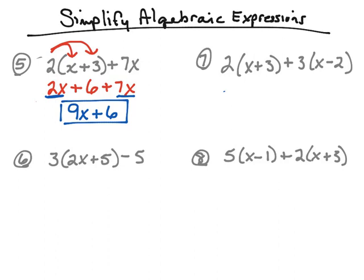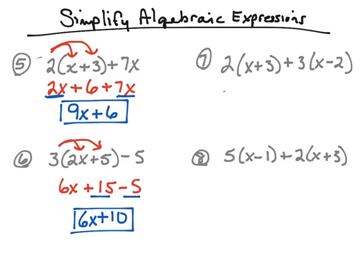Same idea for number six — we'll use distributive property to get rid of the parentheses. Three times two x gives us six x. Then three times five gives us fifteen. The negative five is not in the parentheses, so we just bring it down. Now we look for like terms: fifteen and negative five are like terms. Fifteen plus negative five adds up to positive ten. Since there's nothing to add with that six x, we bring it down. We end up with six x plus ten.